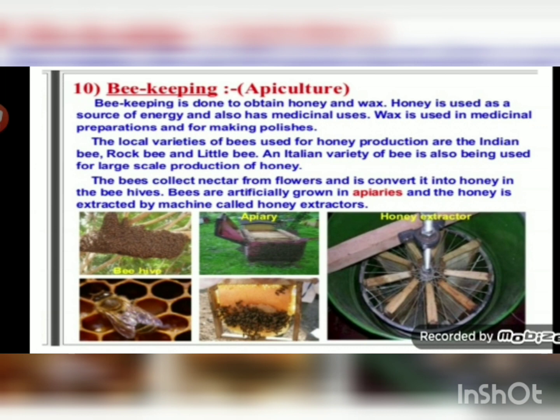The last part of animal husbandry is beekeeping, also known as apiculture. Beekeeping is done to obtain honey and wax. Honey is used as a source of energy and also has medicinal uses; wax is used in medicinal preparations and for making polishes. Local varieties of bee used for honey production are the Indian bee, rock bee, and little bee. The Italian variety is also used for large-scale honey production. Bees collect nectar from flowers and convert it into honey in the beehive. Bees are artificially grown in apiaries and honey is extracted by a machine called a honey extractor.